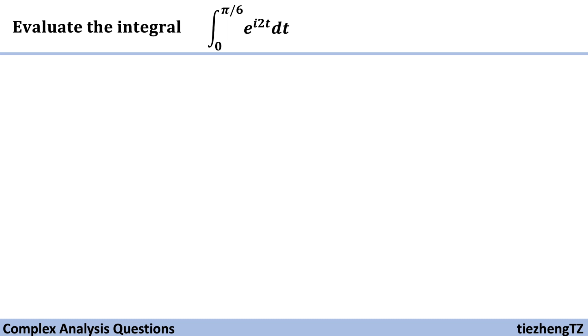So in this question, first we need to find the antiderivative of e^(i*2t), which is (1/2i)e^(i*2t) from 0 to π/6.